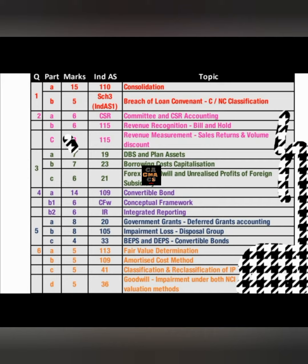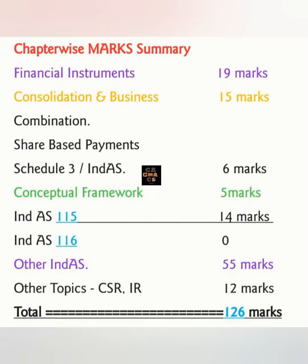The questions were asked from these topics — you can check: consolidation, breach of loan covenant, CSR accounting, revenue recognition, etc. Also, the chapter-wise marks summary is shown here. From these chapters, the weightage has been allotted by ICAI for this question paper, including choice, for a total of 126 marks.